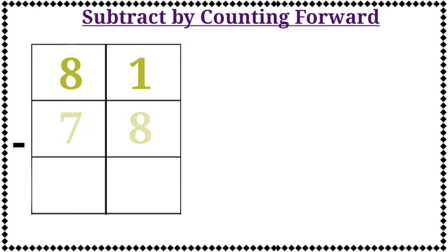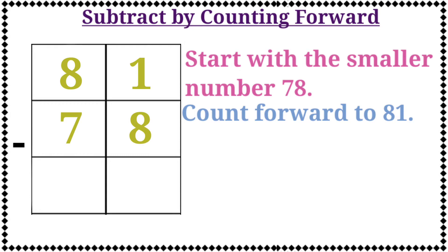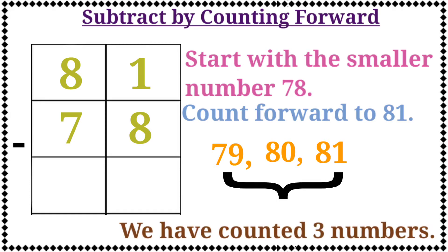The first example is 81 minus 78. We know that we start with the smaller number 78, then count forward to 81. Let's count: 79, 80, 81. Now we have counted 3 numbers. Therefore, the answer is 81 minus 78 is equal to 3.